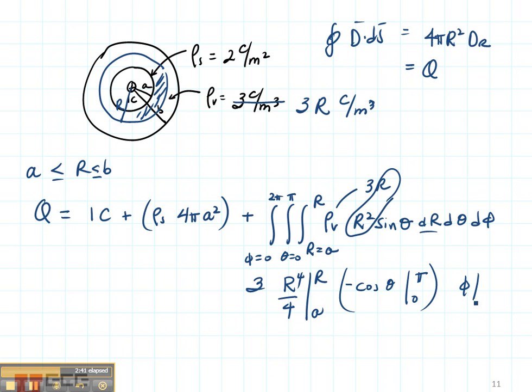My sine is going to go to minus cosine from 0 to π. My phi is just going to go to phi from 0 to 2π. And what I'll get is 3(R⁴ - A⁴) over 4 times 2 times 2π. And that's what's going to get added into my other Q values.